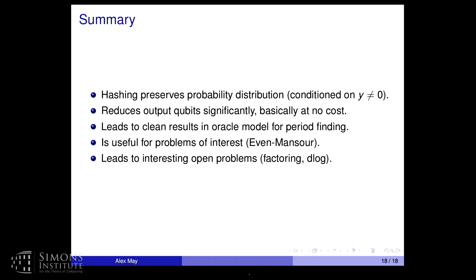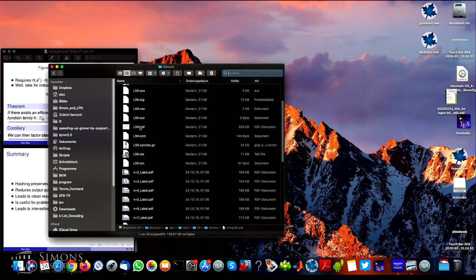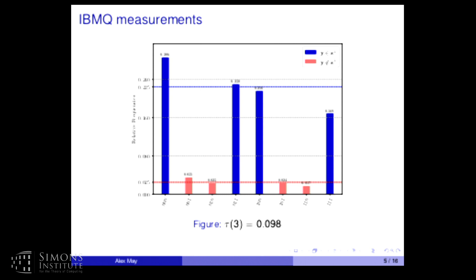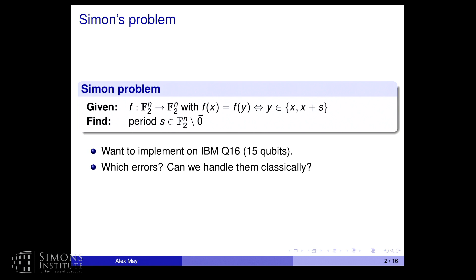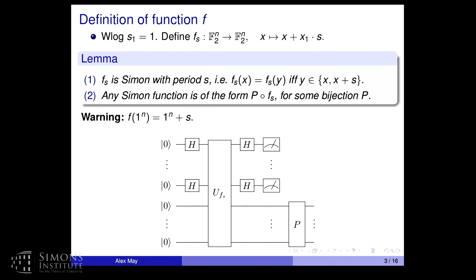Now for Part 2: noisy Simon period finding. The goal is to implement the algorithm on a real device and see the errors, and to show how to deal with them. We need to implement the function f on IBM Q. IBM Q only supports one two-qubit gate: the CNOT. A very simple two-to-one function is chosen: x maps to x itself or to x plus S depending on the first bit.